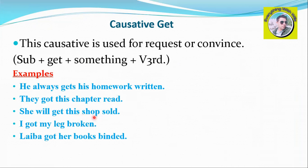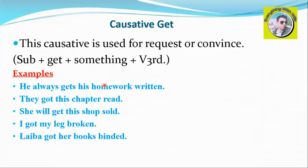'She will get this shop sold.' 'I got my leg broken.' 'I got her books bound.' These were examples of the 'get' causative in passive voice, so that you can understand the difference between active and passive causative.